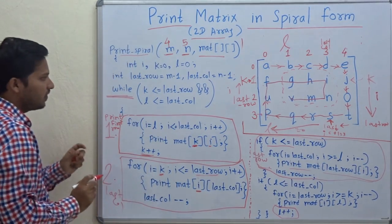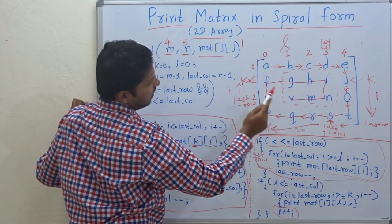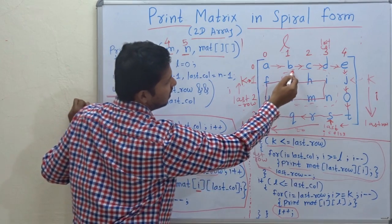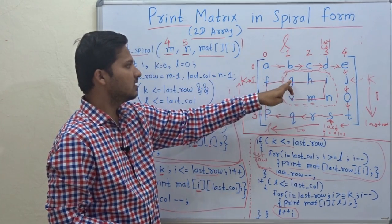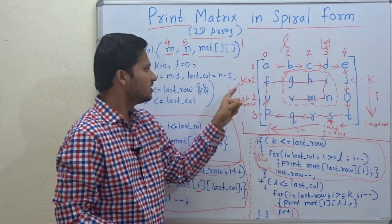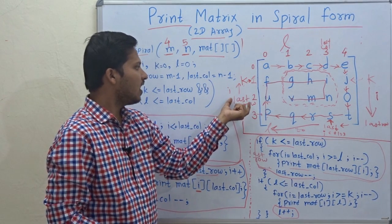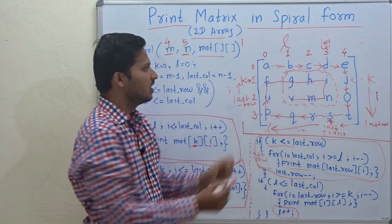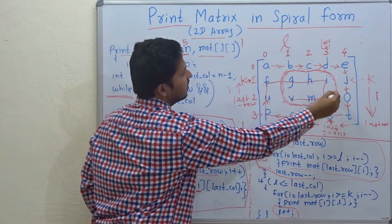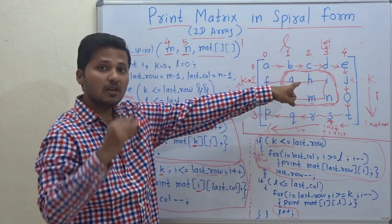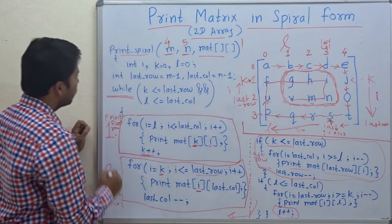Now check all four variables — L, last column, K and last row. All are pointing to the inside matrix. L is pointing to the first index, last column is pointing to the third index, K is pointing to the first row inside, and last row is pointing to the second row. Considering all four indices, they show us the inner matrix, so we can continue inside in the next iteration of the while loop.